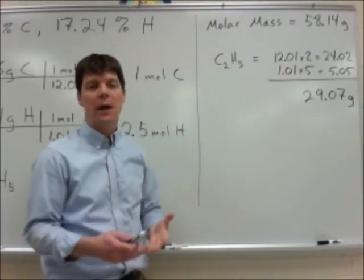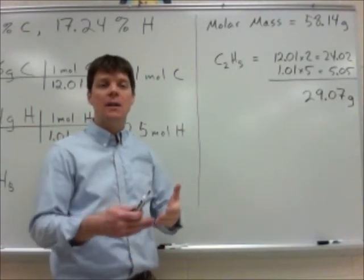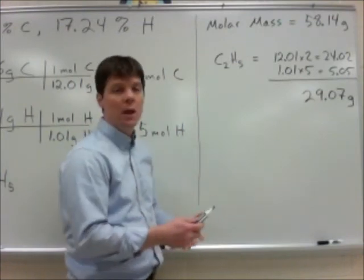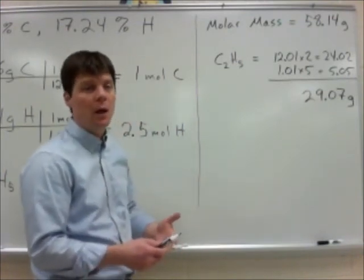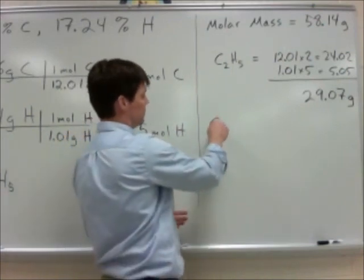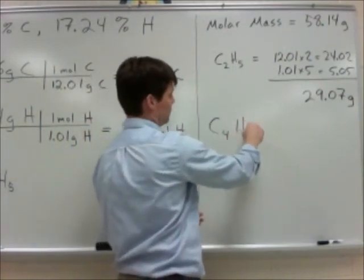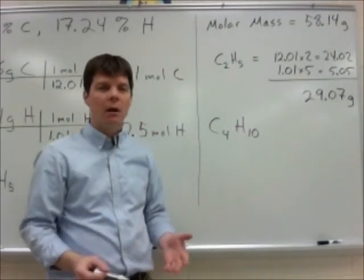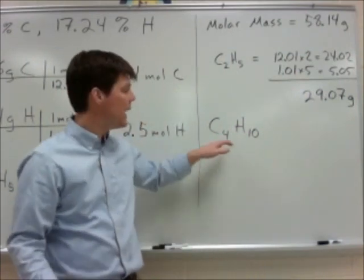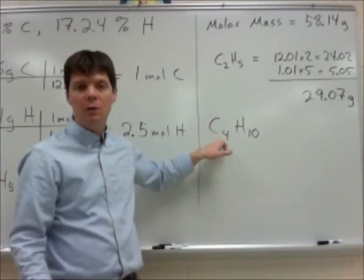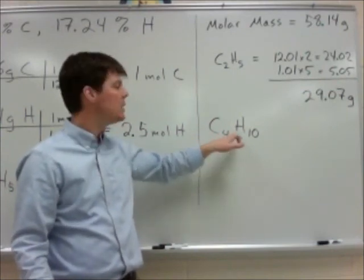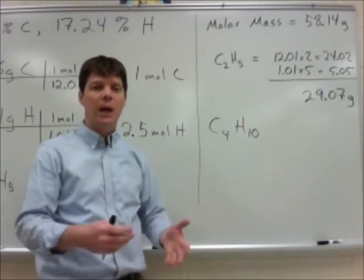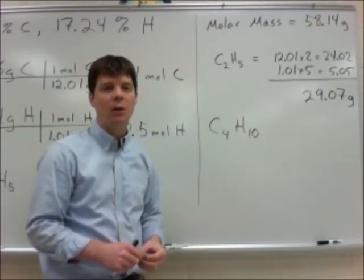So what I need to do to find the molecular formula is take the empirical formula, C2H5, and multiply everything by 2 to find the molecular formula of C4H10. Now a quick check of this would reveal that I have the correct answer. I can take 4 times 12 from the carbons to find 48. 1 times 10 from the hydrogens to get an additional 10 grams. 48 plus 10 is giving me the 58 grams per mole.